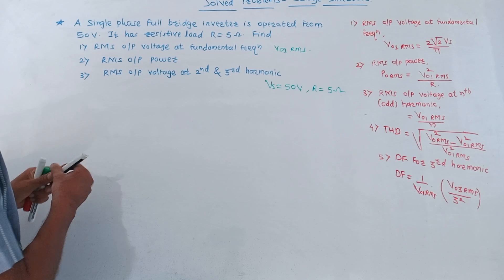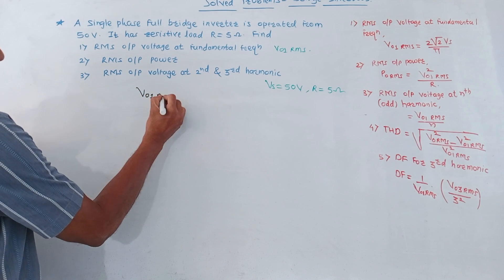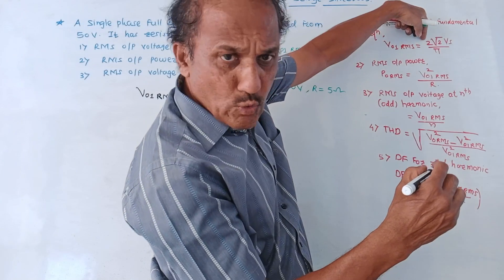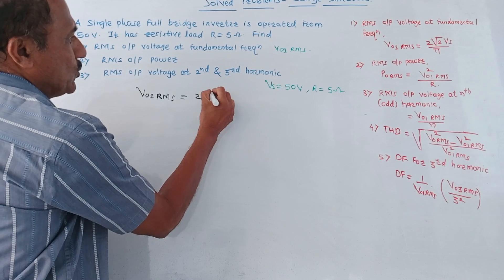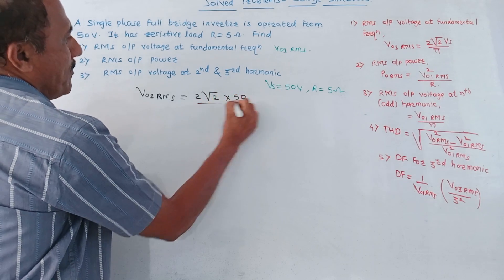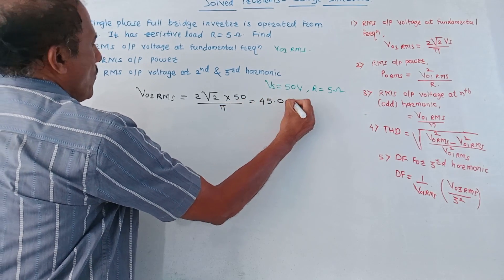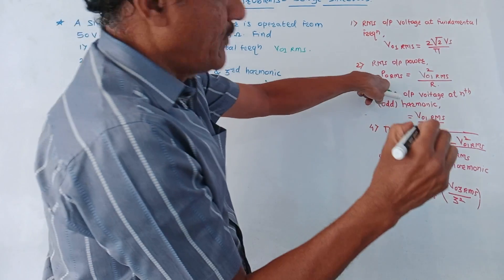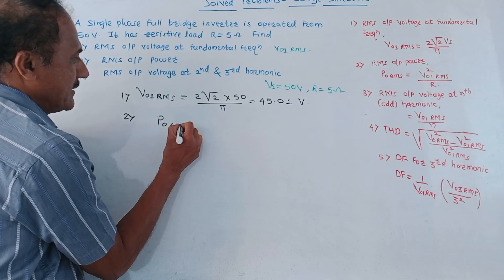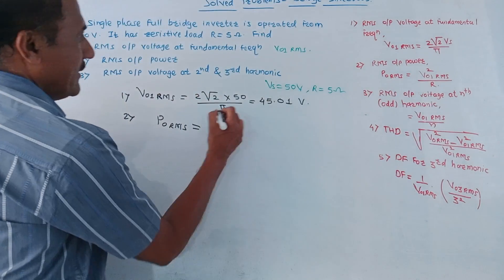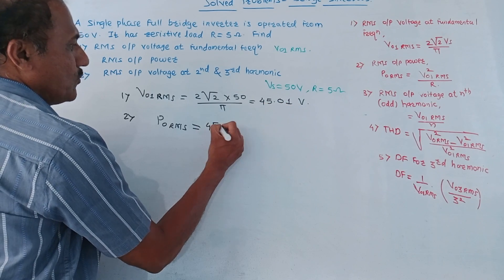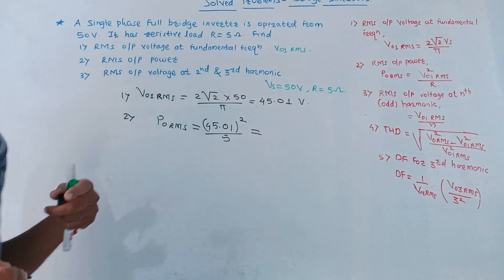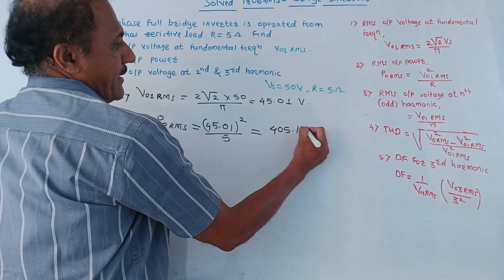Let us do the calculation of the first part, that is V01RMS. Using the formula 2√2 × Vs upon π: it is 2√2 × 50 upon π, so this answer is 45.01 volt. For the second part, RMS output power: P0RMS = V01RMS² upon R = 45.01² upon 5, which gives approximately 403.18 watt.